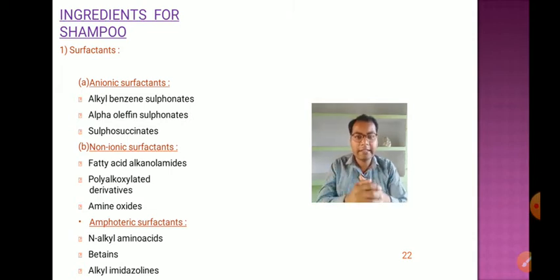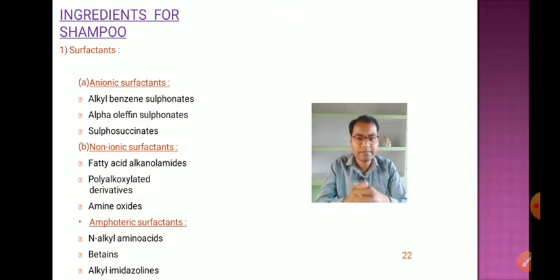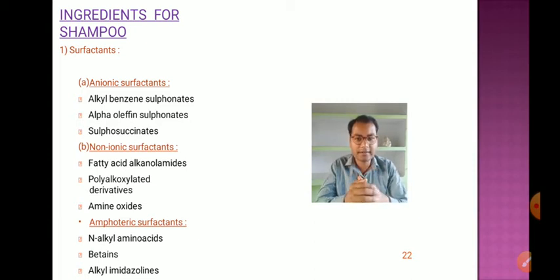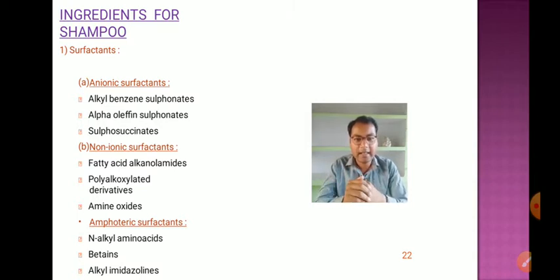The ingredients used in formulating different types of shampoos — the very first ingredient is surfactants. Surfactants are basically surface active agents. There are various types: anionic surfactants, nonionic surfactants, and amphoteric surfactants. Examples of anionic surfactants are alkyl benzene sulfonates, alpha olefin sulfonates, and sulfosuccinates. Nonionic surfactants include fatty acid alkanolamides, poly alkoxylated derivatives, and amine oxides.